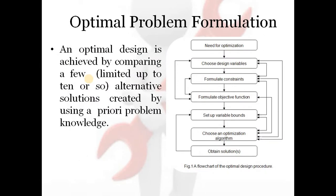This is the general flowchart of an optimization problem. First is the need for optimization, then selection of design variables, then formulation of constraints, then formulation of the objective function, then setting variable bounds, then selecting an optimization algorithm, and finally finding the solution.